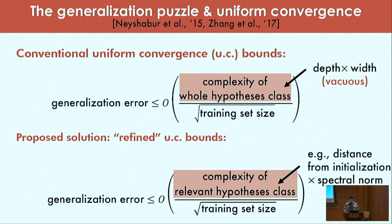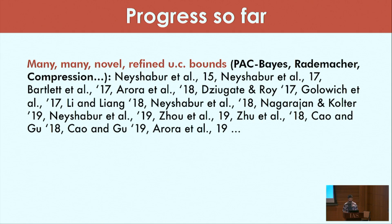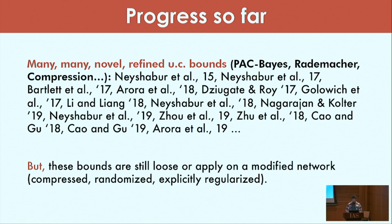This triggered a huge variety of novel uniform convergence based bounds over the last few years ranging from many different kinds of tools like PAC-based, Rademacher complexity, compression, and so on. But the issue still remains: we don't have a bound that fully explains generalization. All these bounds record an improvement in some criteria but fall short in some other criteria.